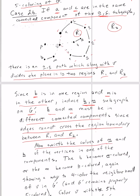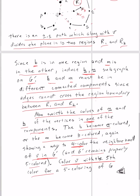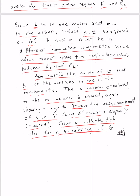Now, we switch the colors of magenta and blue vertices in one of those components. Then b becomes m colored, and that vertex will become b colored. Or m could become b colored. Again, it shows a way to four color the neighborhood of v in g prime. g remains properly five colored because those two blue-magenta subgraphs are disconnected components. And then we color v with the fifth color remaining, which in this case would have been blue. And that gives us a five coloring of g. And that proves the five color theorem for planar graphs.